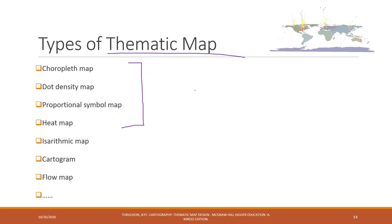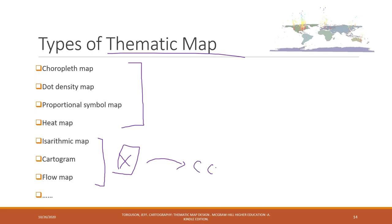In ArcGIS Pro, you can use those predefined templates to create those maps very easily. We also have the isarithmic map, cartogram, flow map, and other types of maps. Those maps are also very popular. However, in ArcGIS Pro, you cannot create those maps directly — you have to go through some calculations.